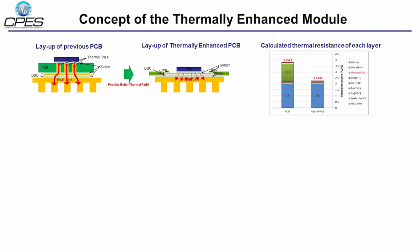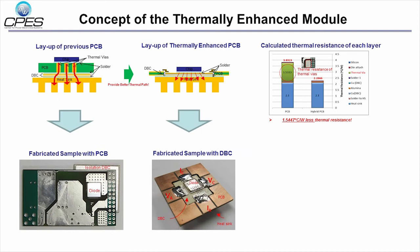This bar chart shows the expected thermal resistance reduction with the thermally enhanced module. By getting rid of thermal resistance of thermal vias, the thermal resistance could be reduced by 1.5 degrees per watt less than conventional PCB modules.